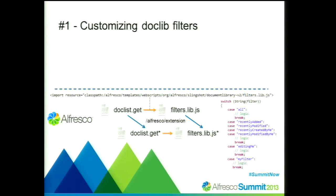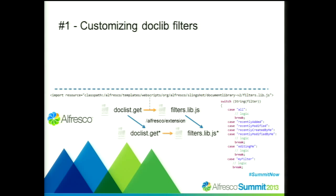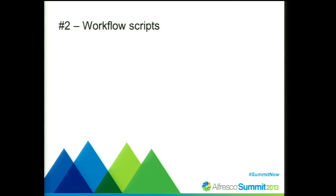So you have to change a lot of files, both on the Share side and on the repository side, just to add another filter. And it's not extensible at all, because only one file can replace or override filters.lib.js or doclist-get.js. There's no way for a community add-on to add filters to the document library without overriding any customer customizations or dealing with ordering issues — which file gets installed first and overwrites the pre-existing files.